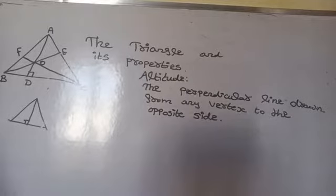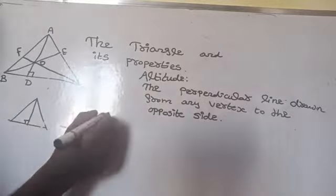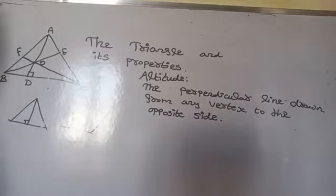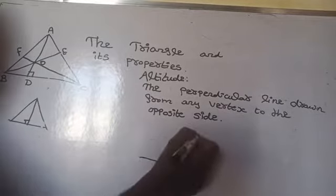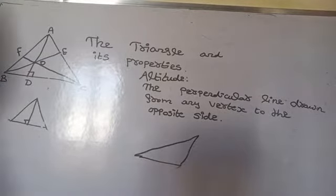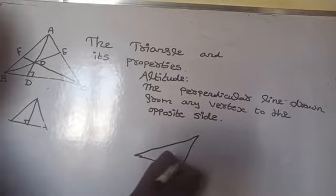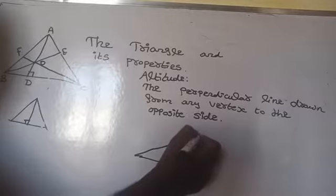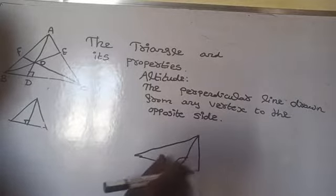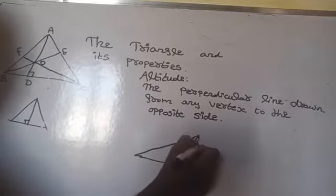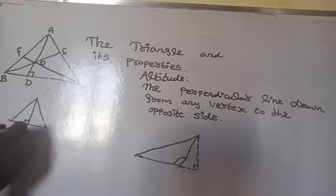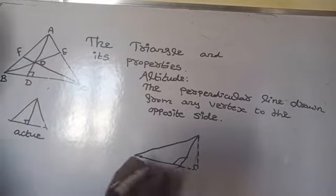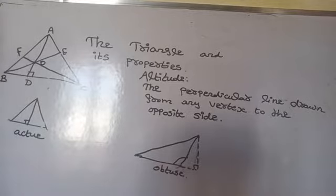If the triangle is obtuse — meaning one angle is obtuse — it is called an obtuse angle triangle. In an obtuse angle triangle, the altitude lies exterior to the triangle.